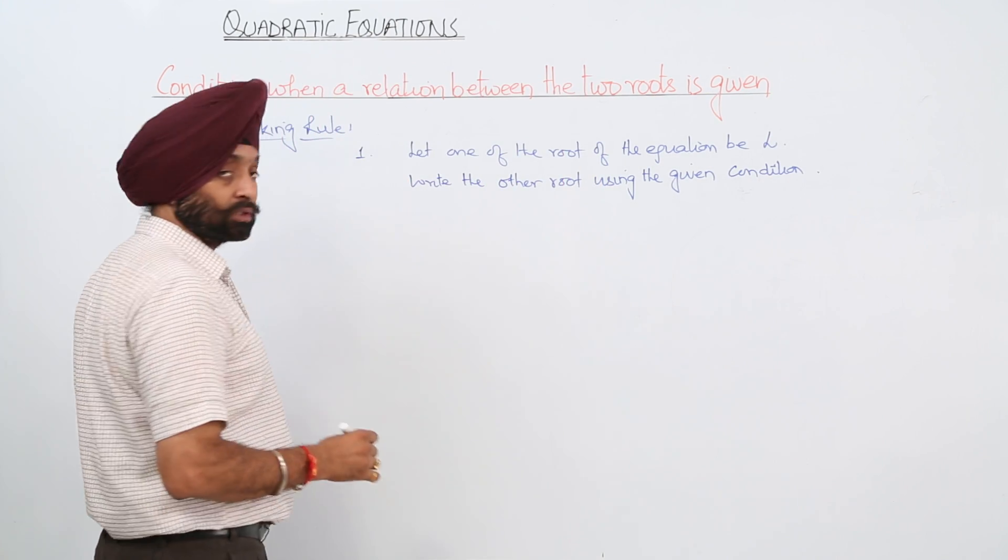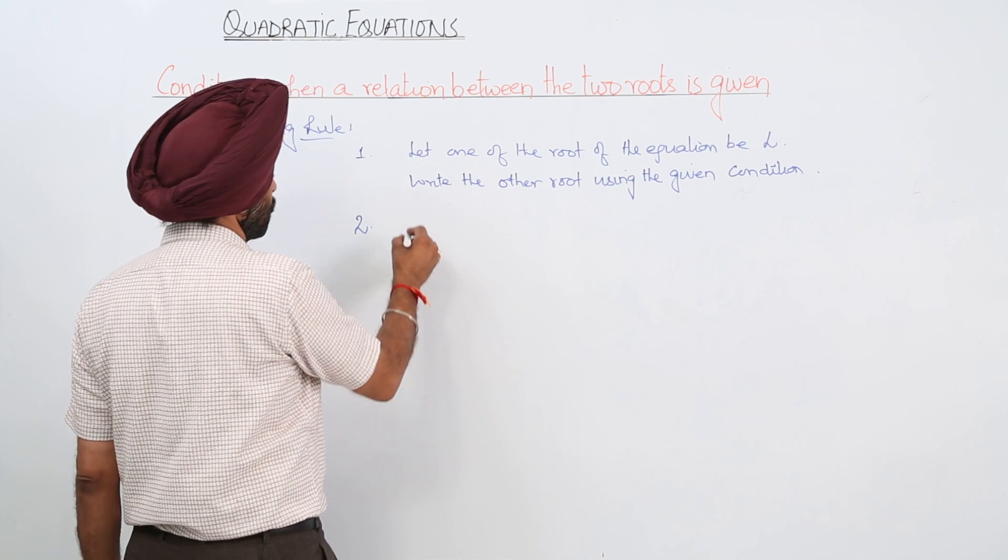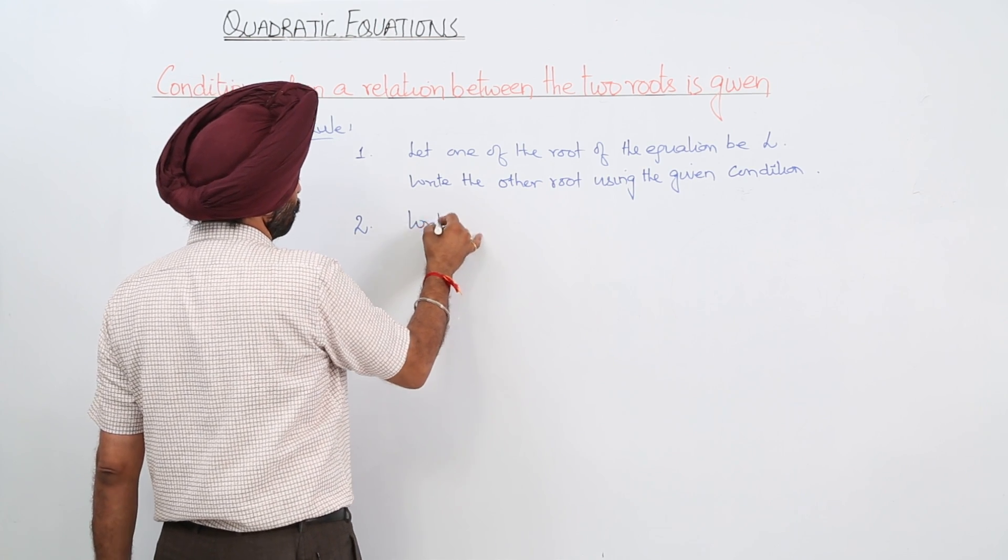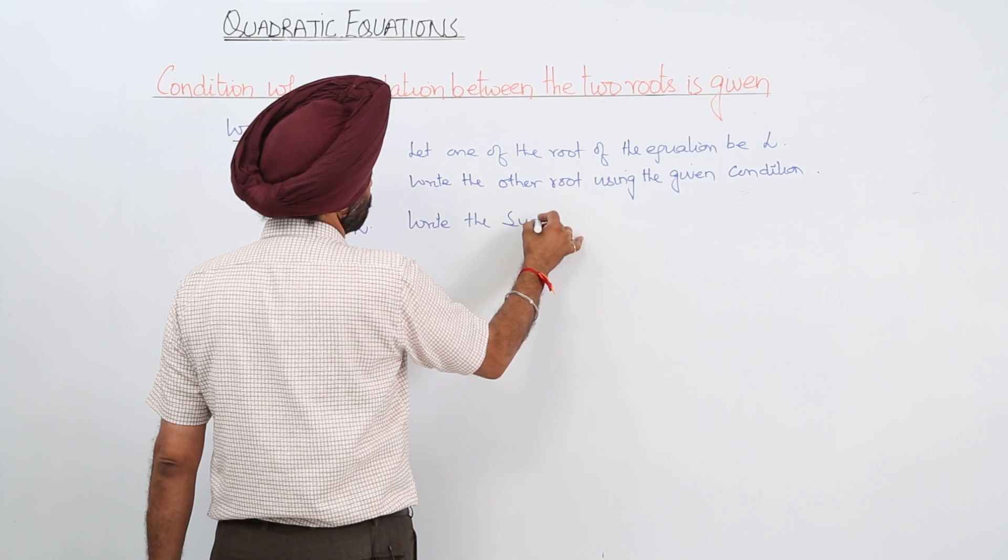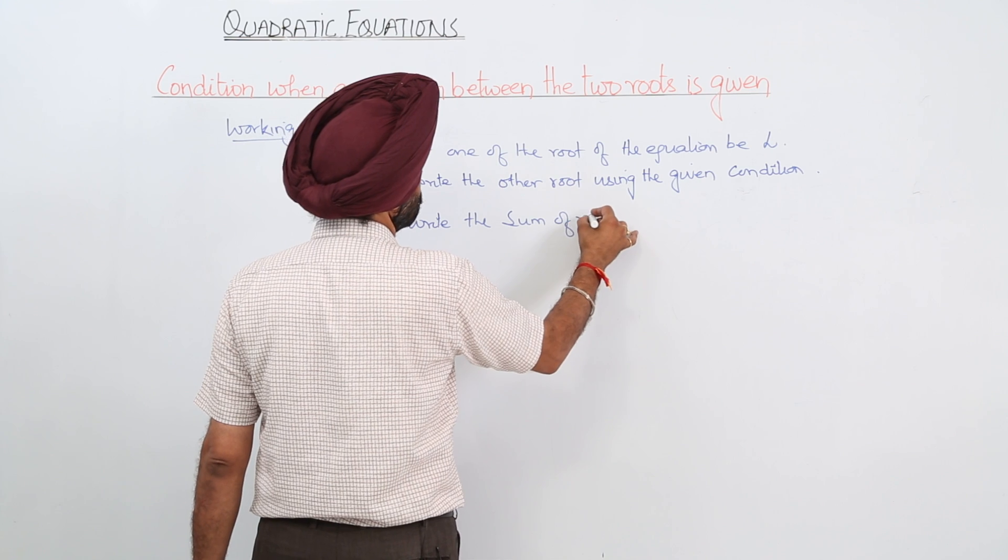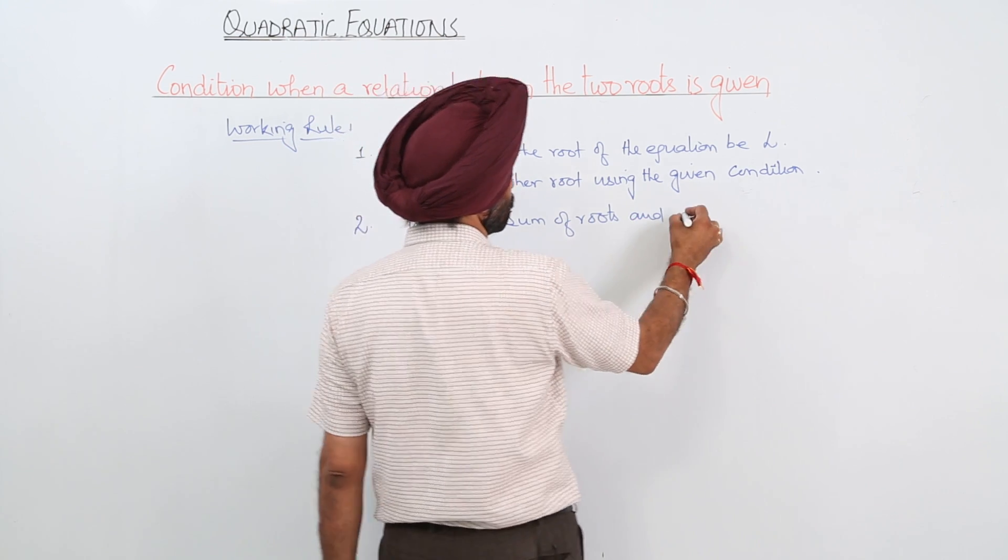So this is step number 1. Step number 2: Write the sum of roots and product of roots.